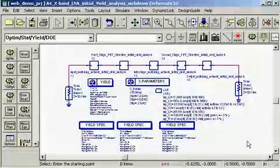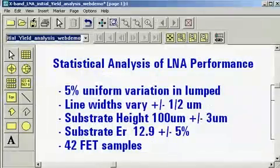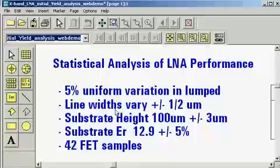This is the top-level schematic of the LNA that shows the yield setup with the yield specs. During the 1,000 iterations of Monte Carlo run, I will be varying the lumped elements, the microstrip line width, the substrate height, the substrate dielectric constant, and I also have 42 different FET samples.